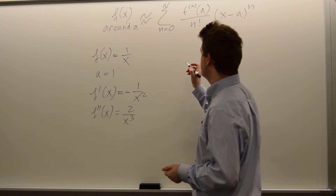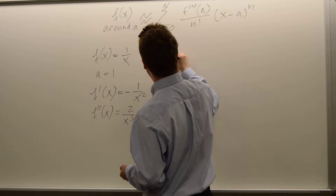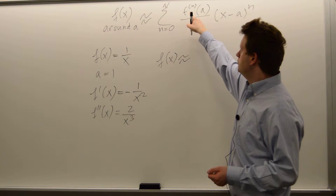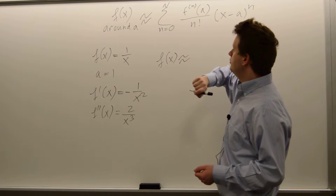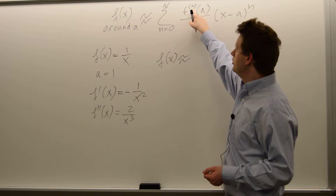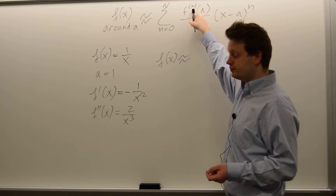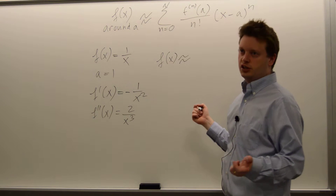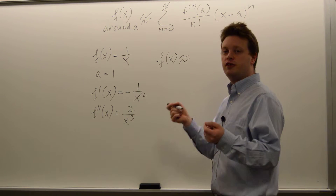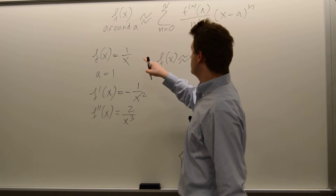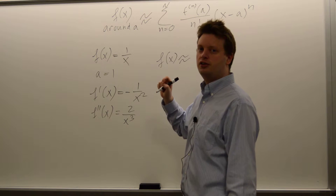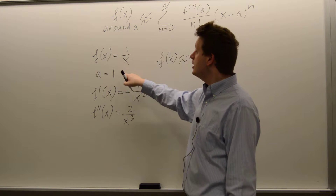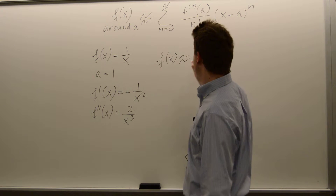Let's approximate this function. f of x is approximately equal to — starting with n equals 0, which is the zeroth derivative, meaning just the function value. So the first term is the function value itself at the point we want to approximate, and 1 over 1 is just 1.